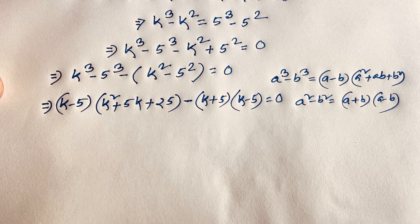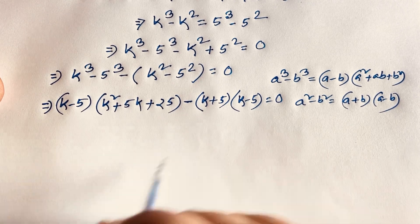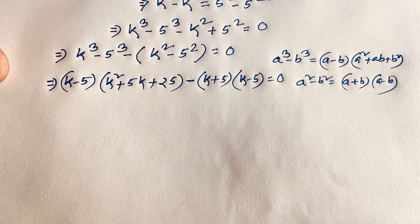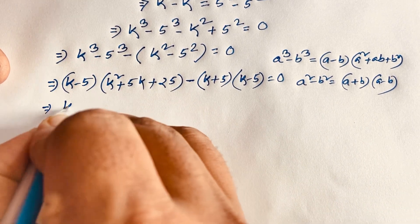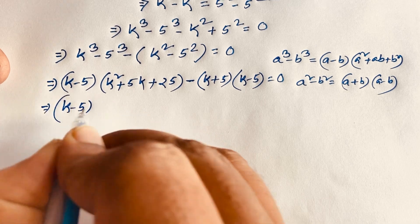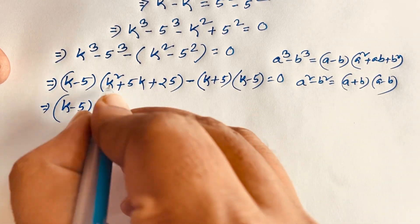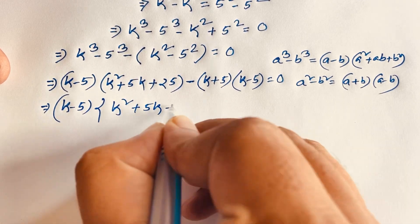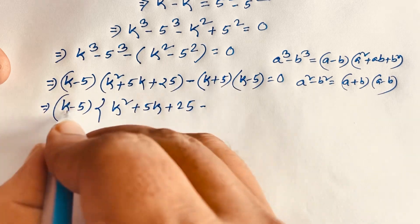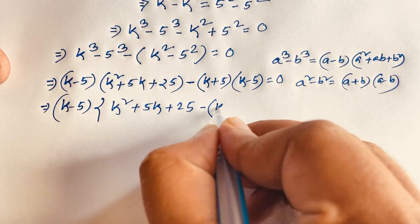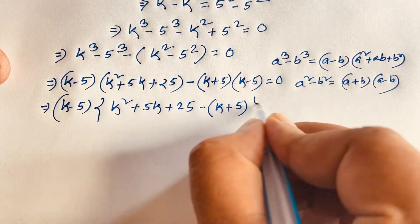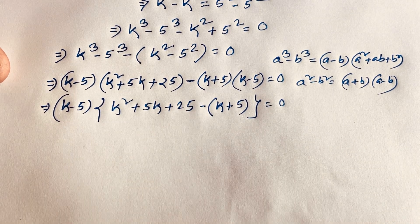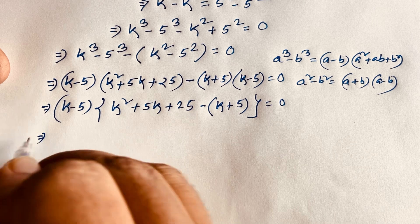Now I can see that (k - 5) appears in both terms. So I can factor out (k - 5). Dividing through, the first term gives k² + 5k + 25, and dividing the second gives minus (k + 5), equal to zero.